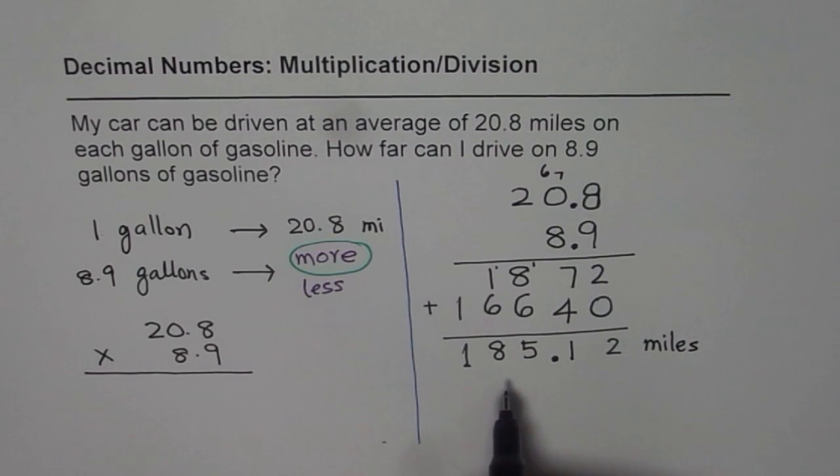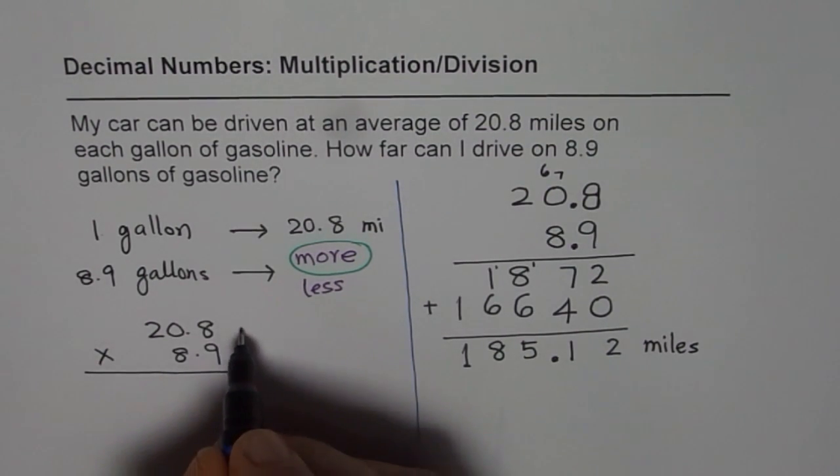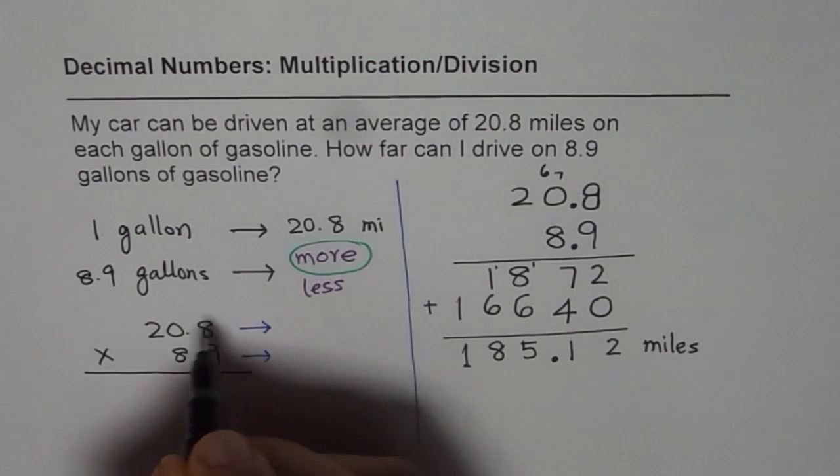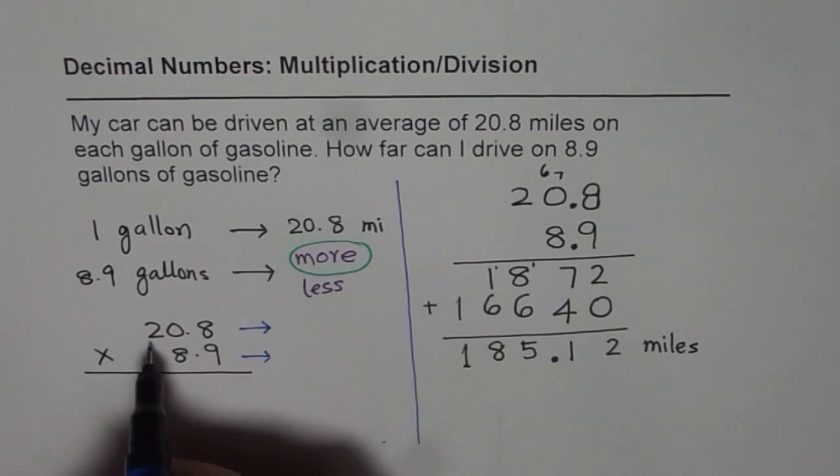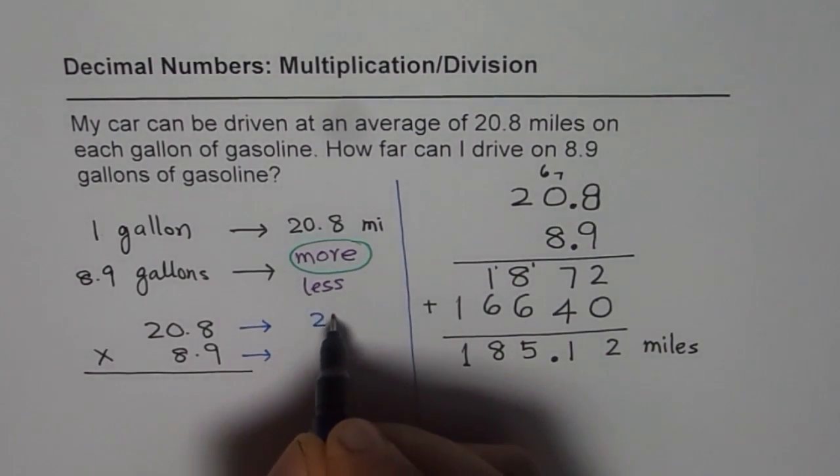How can we figure that out? We can always do it by estimating. So let us estimate. 20.8 and 8.9. So what we can do is we can round the numbers to estimate. Let us see how to estimate. 20.8 could be rounded to, if I round it downwards to 20 and this upwards to 9. I know it is 21, let us say 21.